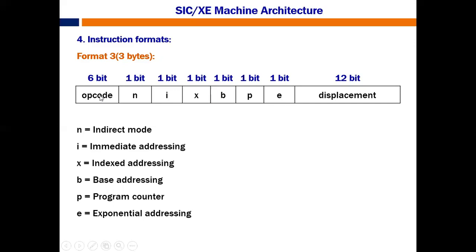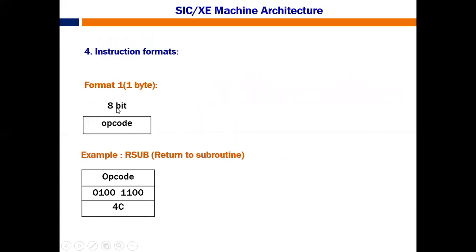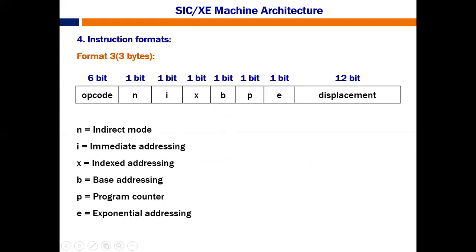In format 3, after the 6-bit opcode, the next 6 components are N, I, X, B, P, E — each taking 1 bit individually. Then the remaining 12 bits are for displacement, which is used to find the target address. So: 6 bits for opcode, 6 bits for NIXBPE flags, and 12 bits for displacement.